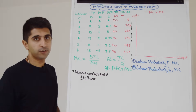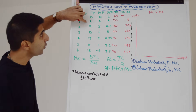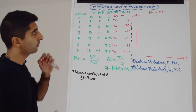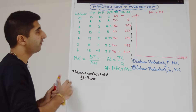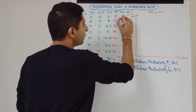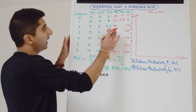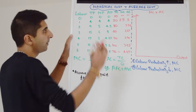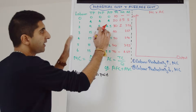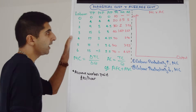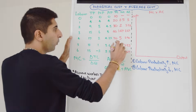Let's work out marginal costs. We can't do it for the first row, but when we employ the first worker and four units are being produced, the marginal cost is the change in TC which is 10 divided by the change in output which is 4 — so 2.5. The change in TC is always going to be 10, so for the next one it's 10 divided by 5, which is 2. Then 10 divided by 6, that's 1.67. Then 10 divided by 2, that's 5. And then 10 divided by 1, that's 10.